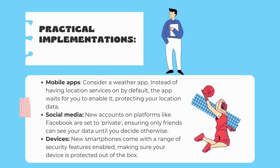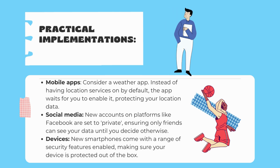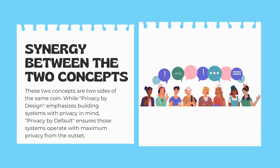A mobile device manufacturer implements privacy by design by setting the device's security features, such as password protection and biometric authentication, to the strongest settings by default. Users have to actively change these settings if they want to use weaker security options. These two concepts are two sides of the same coin — while privacy by design emphasizes building systems with privacy in mind, privacy by default ensures those systems operate with maximum privacy from the outset.